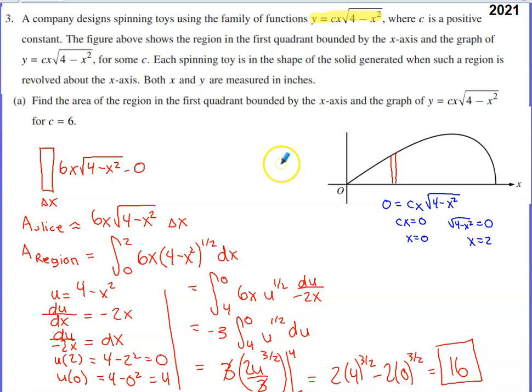In part A, they ask us to find the area of the region in the first quadrant bounded by the x-axis and the graph of y equals cx square root of 4 minus x squared for the c value of 6. What I did, and we're going to need this throughout the next few portions of the problem, is I did it without putting 6 in place of c. I wanted to know what these x-intercepts were.